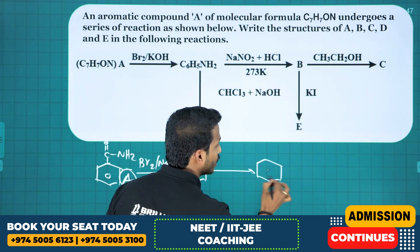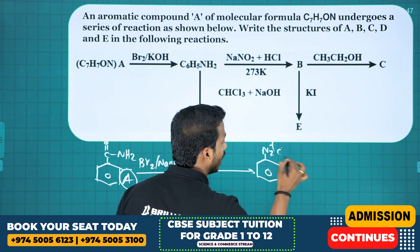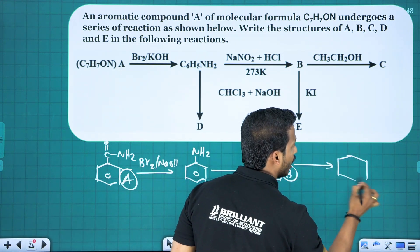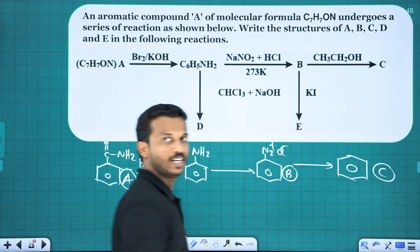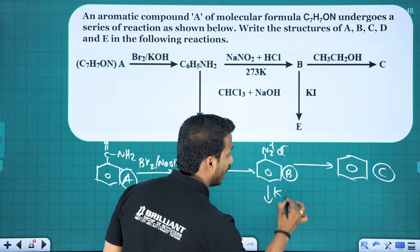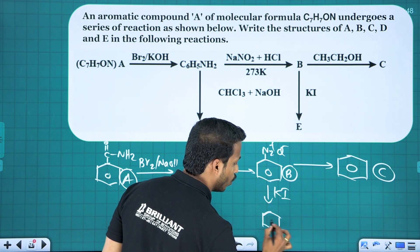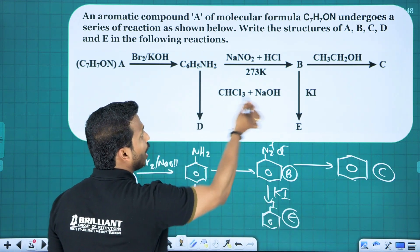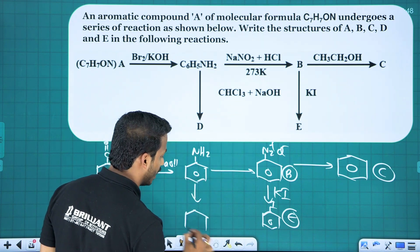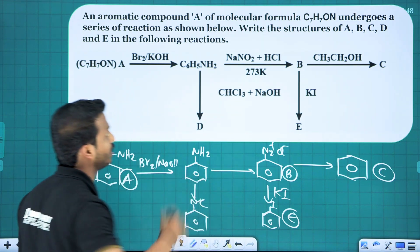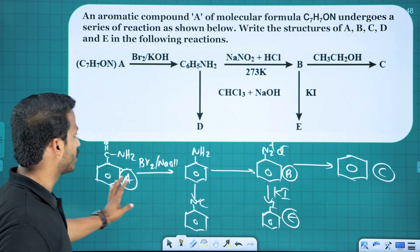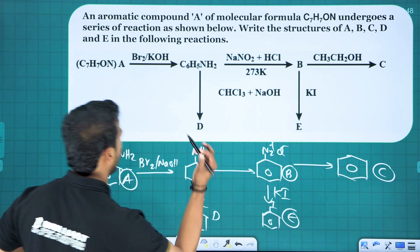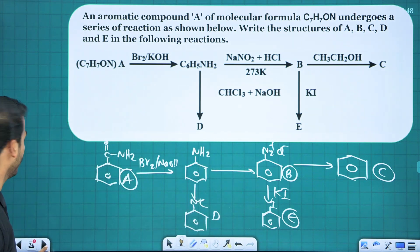Diazonium salt treated with ethanol gives benzene — compound C. Treated with KI gives iodobenzene — compound E. Aniline on carbylamine reaction gives phenyl isocyanide — compound D. So A is benzamide, B is diazonium salt, C is benzene, D is phenyl isocyanide, and E is iodobenzene.